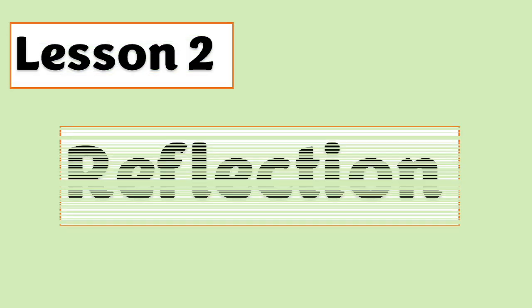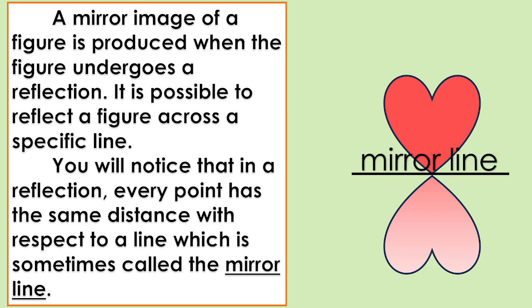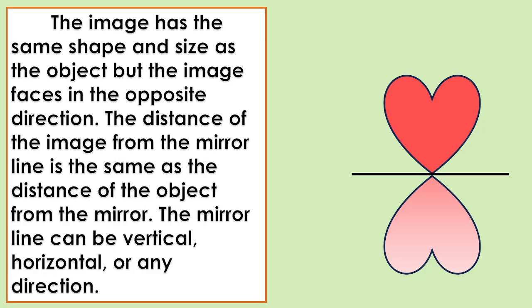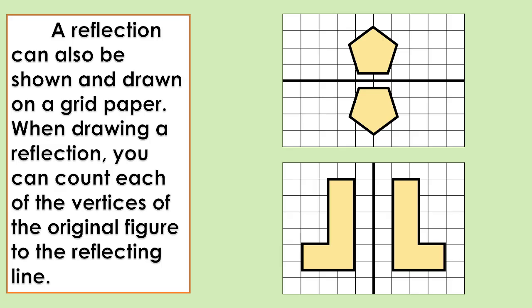Lesson number two: Reflection. A mirror image of a figure is produced when the figure undergoes a reflection. It is possible to reflect a figure across a specific line. In a reflection, every point has the same distance with respect to a line, which is sometimes called the mirror line. The image has the same shape and size as the object, but the image faces in the opposite direction. The distance of the image from the mirror line is the same as the distance of the object from the mirror line. The mirror line can be vertical, horizontal, or any direction. A reflection can also be shown and drawn on graph paper.